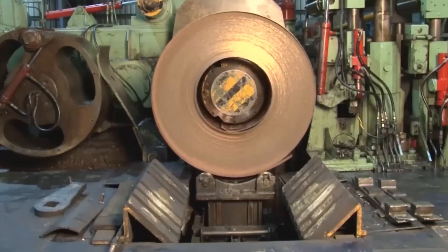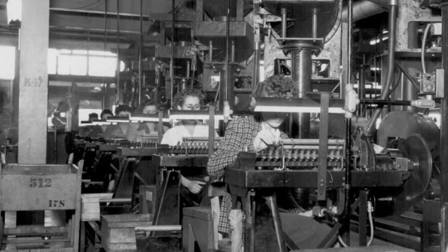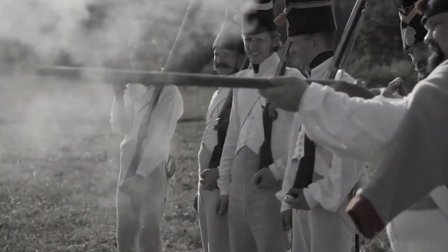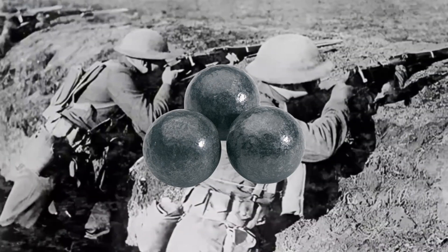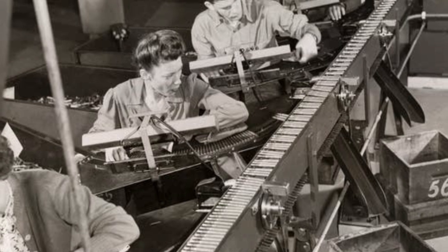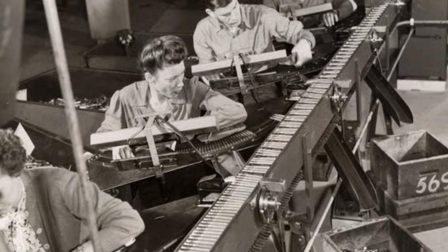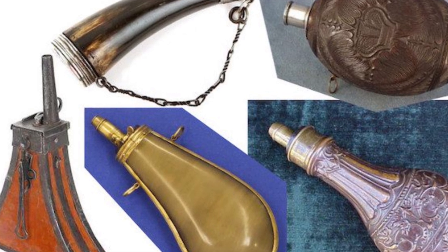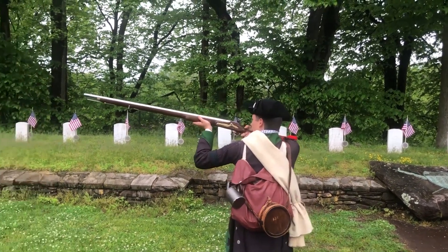Before diving into modern production methods, it's worth understanding how ammunition manufacturing evolved. The earliest firearms used simple lead balls propelled by black powder, with each component made largely by hand. Soldiers would measure powder from flasks, pack it with wadding, and seat lead balls one shot at a time.